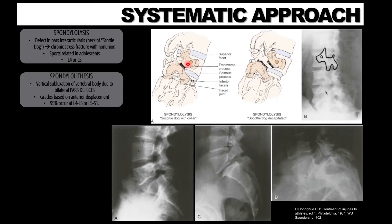These are referred to as chronic stress fractures with non-union, typically seen in adolescents involved in sports. Most commonly, this fracture occurs at the L4 or L5 vertebral level. The most common radiographic finding is separation of the pars interarticularis. CT or single photon emission CT may be helpful in confirming this diagnosis due to the large amount of superimposition.